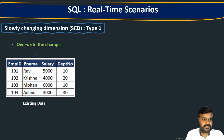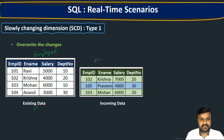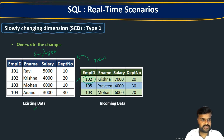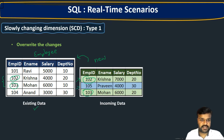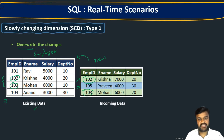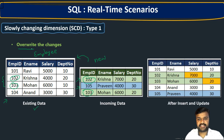Assume this is an employee table with four records — that is the existing data. Now you are going to get new data that you need to merge with this. If you observe, employee IDs 102 and 103 exist in both the existing data and the incoming data, so for those two records you need to perform an update operation. Employee 105 is a new record that you need to insert.